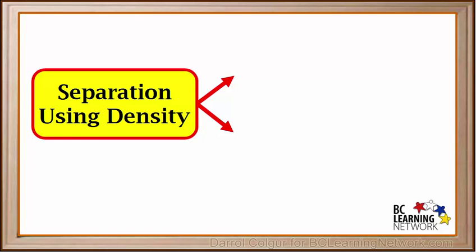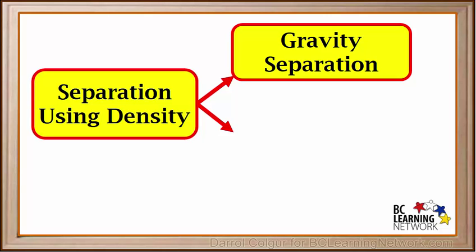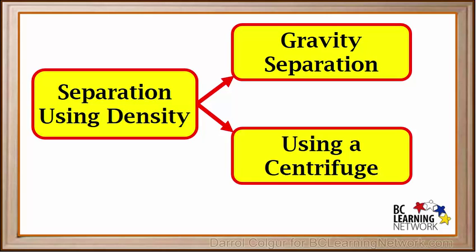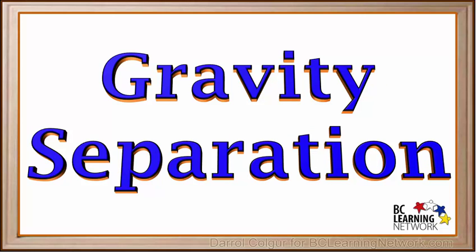We can separate mixtures using density by two methods. One is gravity separation, and the other is using a centrifuge. First we'll look at gravity separation. Usually this involves the particles of a more dense substance being pulled down by gravity or settling out, while the other substance stays put.